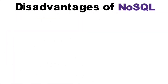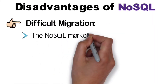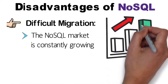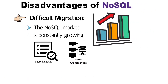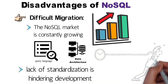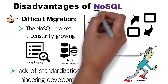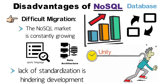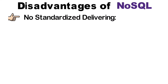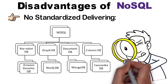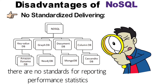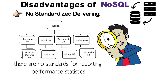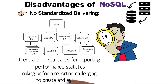Disadvantages of NoSQL: Difficult Migration — the NoSQL market is constantly growing; however, because each database has its own data architecture and query language, the lack of standardization is hindering development. This makes conversion to a NoSQL database difficult and impedes unity and maturity. No Standardized Reporting — because there are so many distinct types of NoSQL databases, there is no standard for reporting performance statistics, making uniform reporting challenging to create and execute.